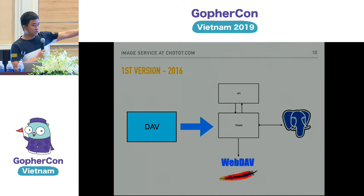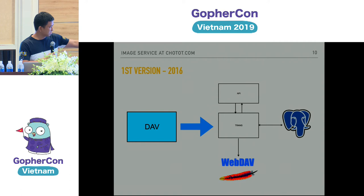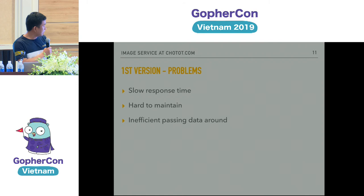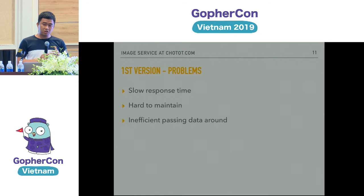Inside the app module there was an API — just a Python module wrapped with an image library to convert and resize images. Then there was a transaction server that would talk to a relational database to store the image ID and metadata. After all that, we stored the image in the web app. The problem was slow response time because the image data passed through a lot of hops from the Python API to the transaction server. Also, because it was written in C, it was really hard to find people with C knowledge to maintain it.